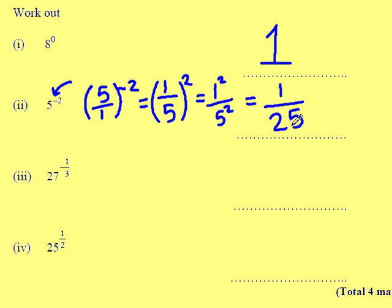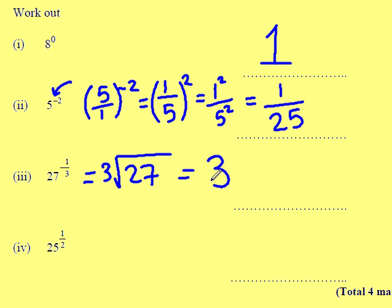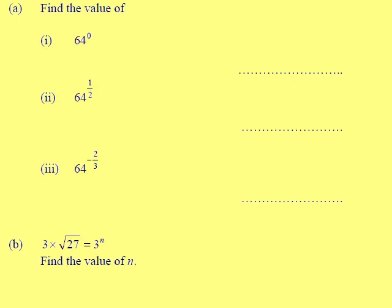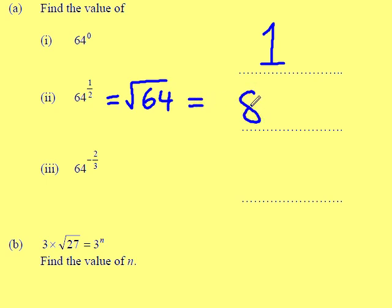27 to the power of a third will be the cube root of 27, which is just the number 3. 25 to the power of 1 half is the square root of 25, which gives an answer of 5. Question 16: 64 to the power of 0 is 1. 64 to the power of a half will be the square root of 64, and we all know the square root of 64 is 8.